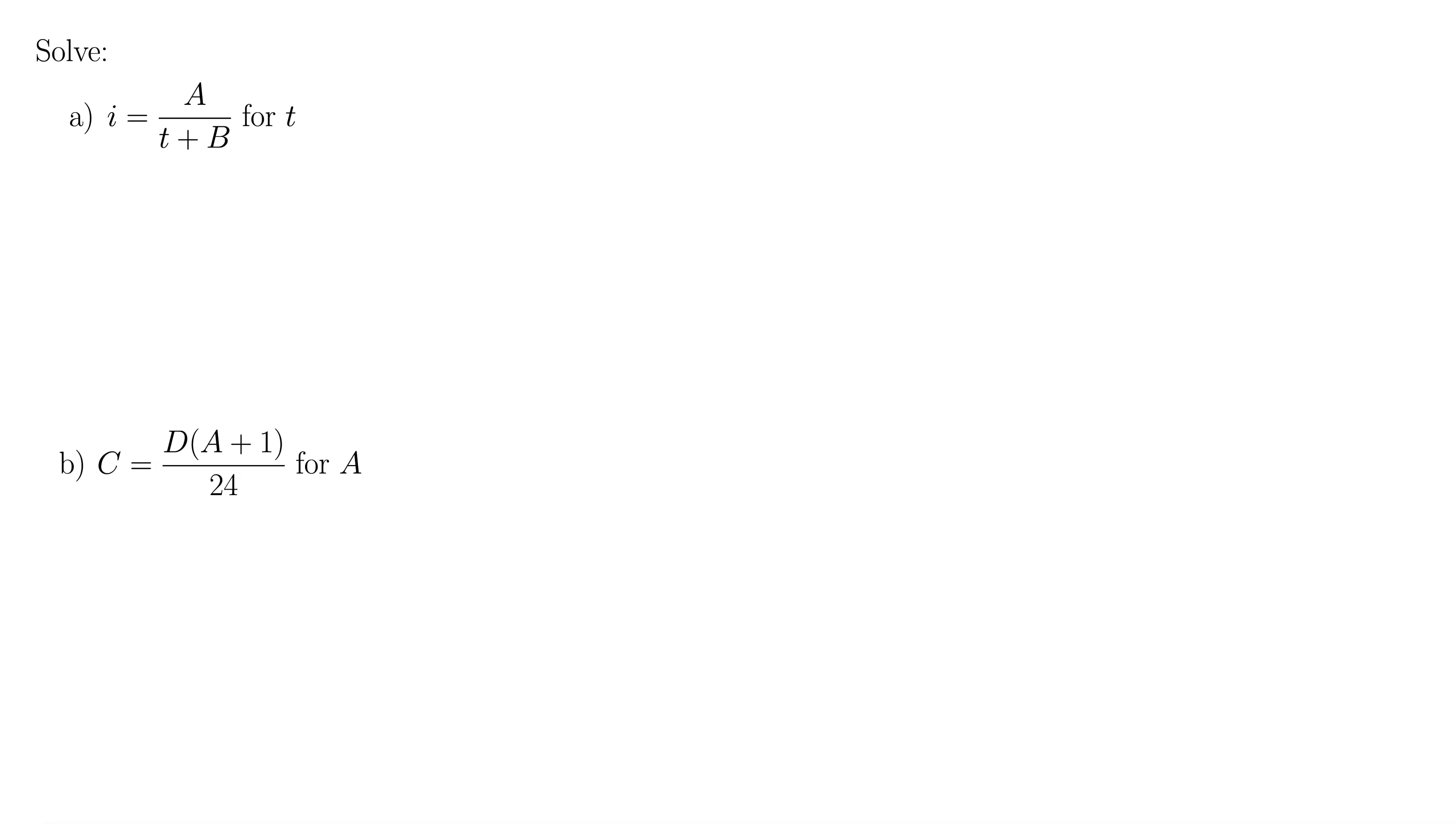These rational equations have a bunch of different variables, but solving works the same as if we were just working with x and a bunch of numbers. So don't be intimidated when you see variables like this. All the algebra works the same. Here we're trying to solve i equals A over t plus B for the variable t. So this is our goal here, this t.